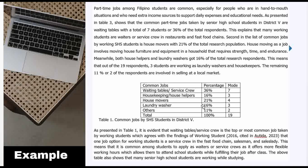As you can see in my slide, it is evident that waiting tables is the most common job. So here I am proving that the common working job of senior high school students is being a service crew — a waiter or waitress at a restaurant or fast food chain. As you can see, it says 'which agrees with the findings of...' — so I am relating my result to another study that has the same finding. According to Working Student (2016), cited in Autida (2023), the common job of working students is service crew in fast food chains.